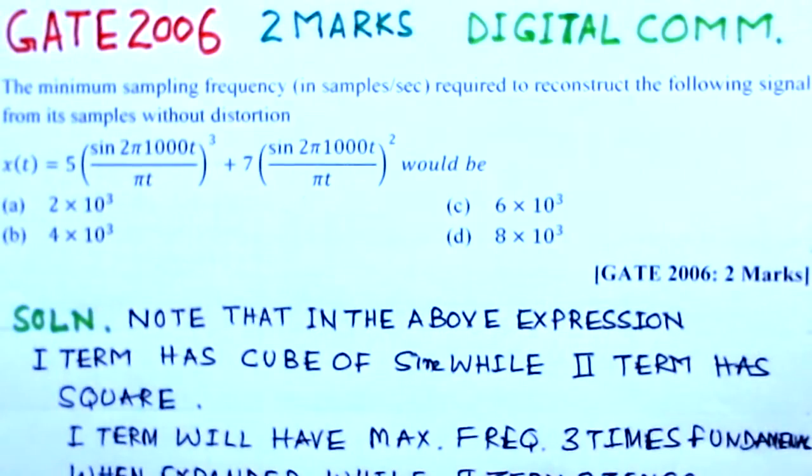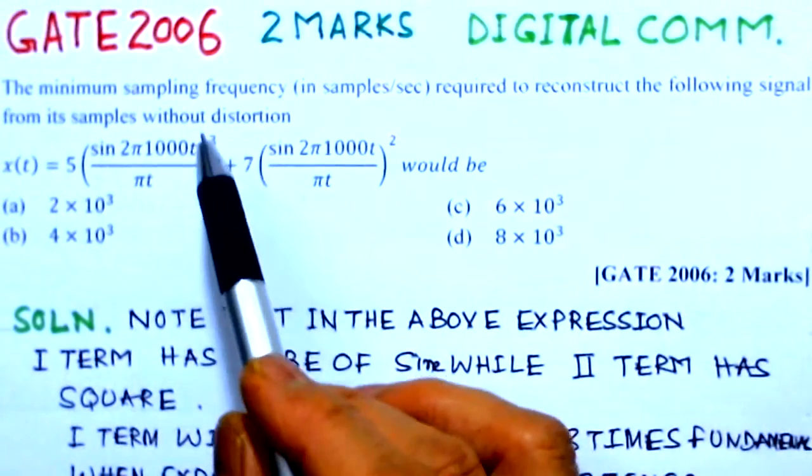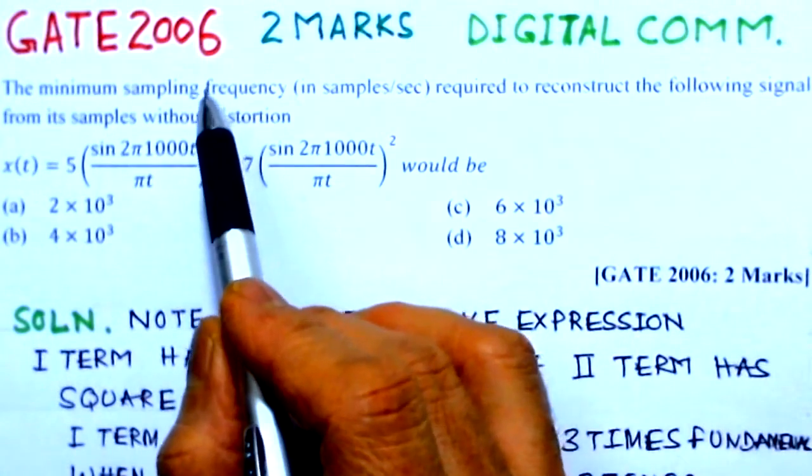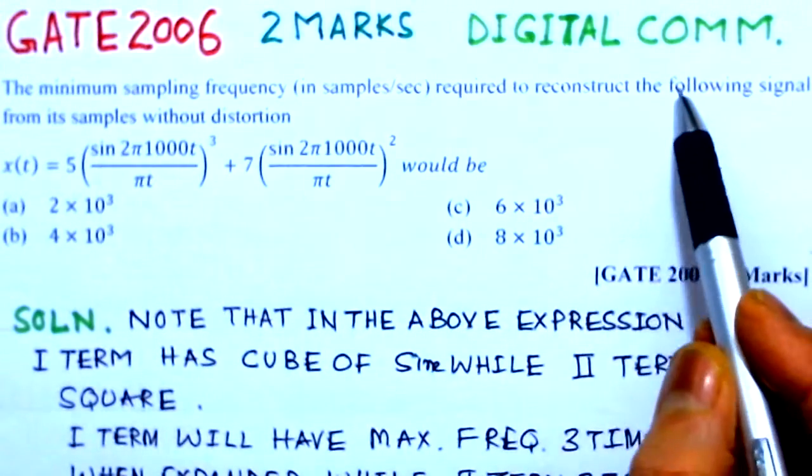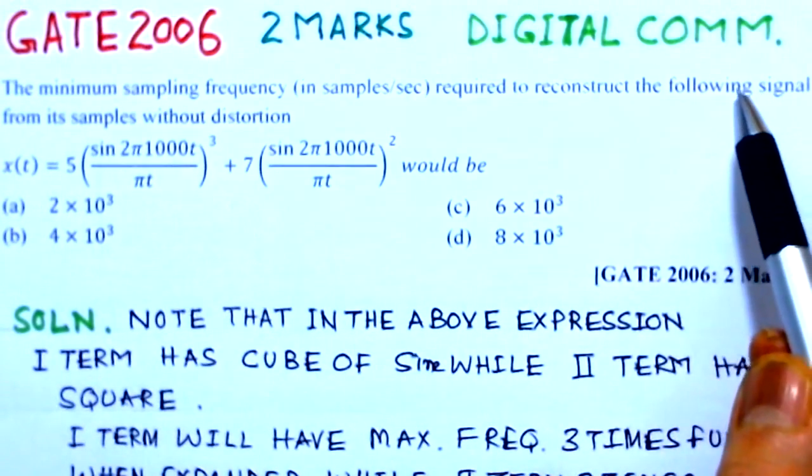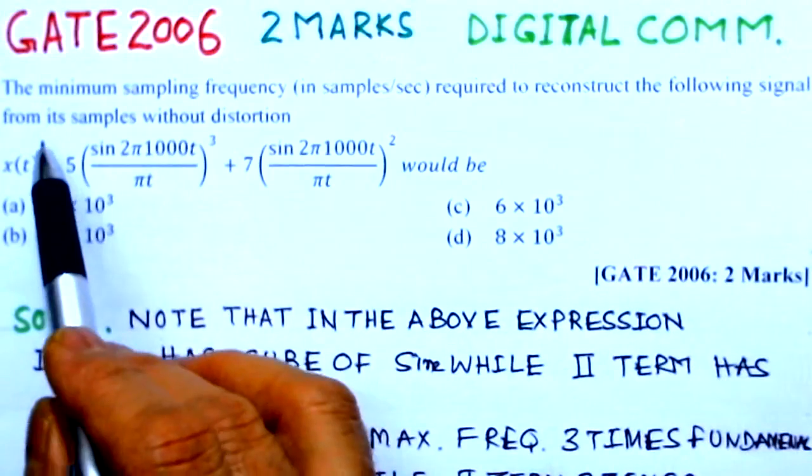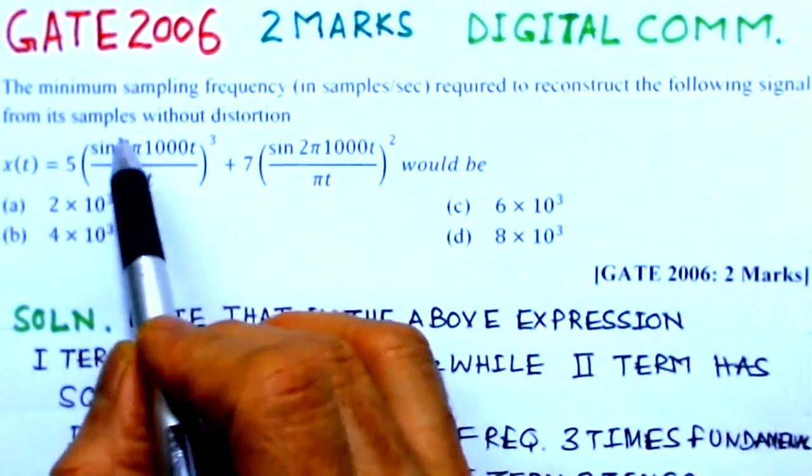The present GATE problem is of the year 2006 and is for two marks in the area of digital communication. We first state the problem and then give the solution to this problem.